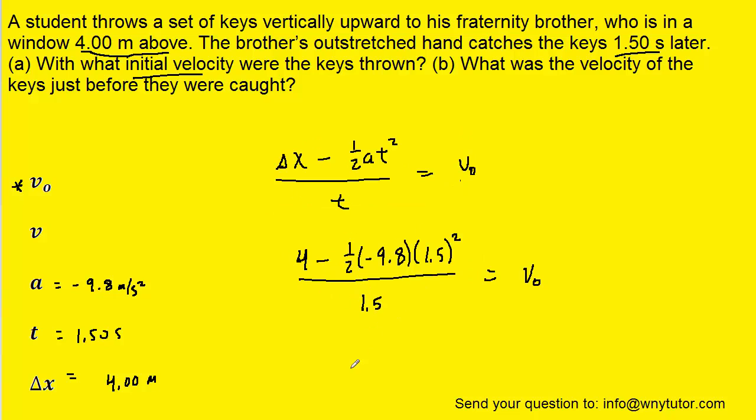And when we simplify that on our calculators, we get positive 10.0 meters per second for the initial velocity. The fact that it came out positive means that the initial direction of that initial velocity is upward, which makes sense because she's throwing the keys upward.